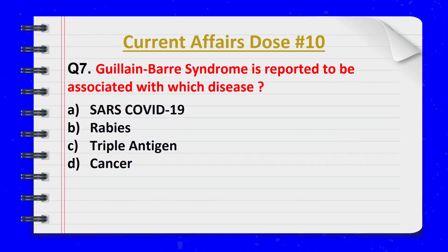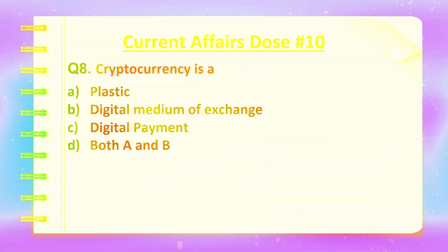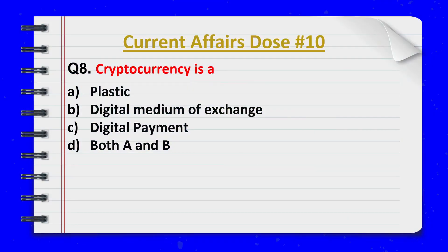Question 7. Guillain-Barré syndrome is reported to be associated with which disease? Correct answer: option number A — SARS-CoV-2.